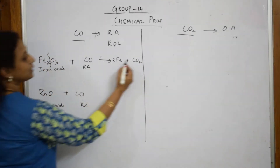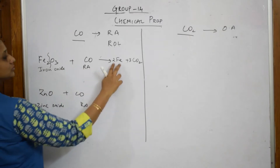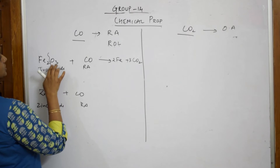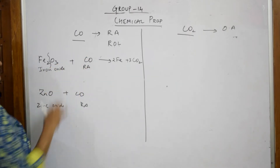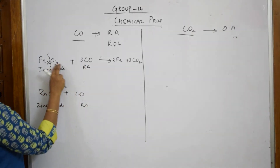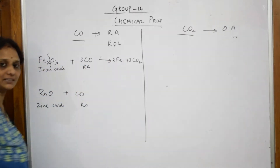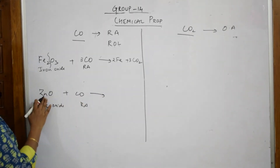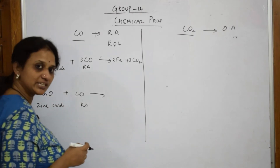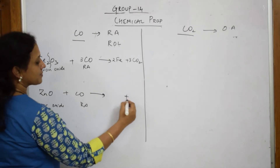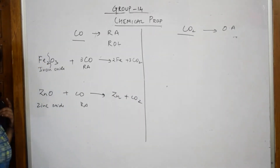Let us check the balance: iron is 2 on both sides, oxygen is 3 on both sides, and carbon is 3 on both sides — so 3 CO gives 3 CO₂, that is balanced. Now coming back to zinc oxide: when CO is added to ZnO, it acts as a reducing agent and picks up the oxygen, giving zinc metal. That is how carbon monoxide reacts as a reducing agent.